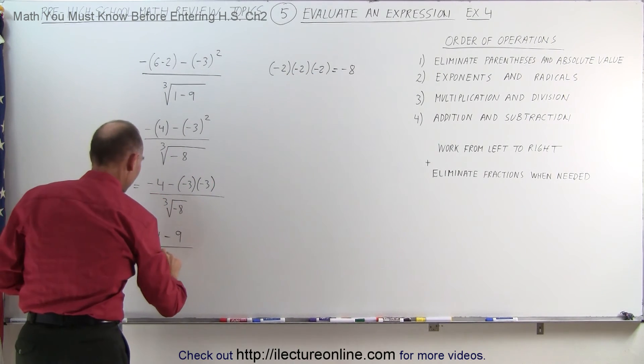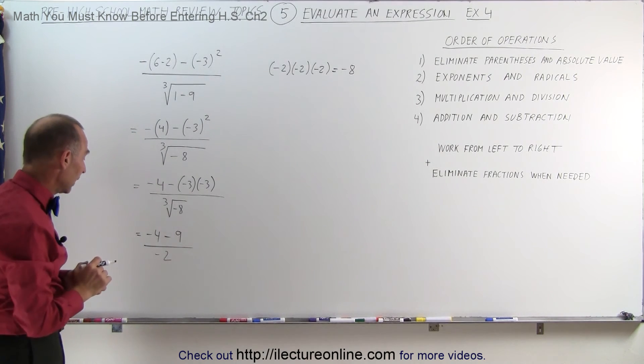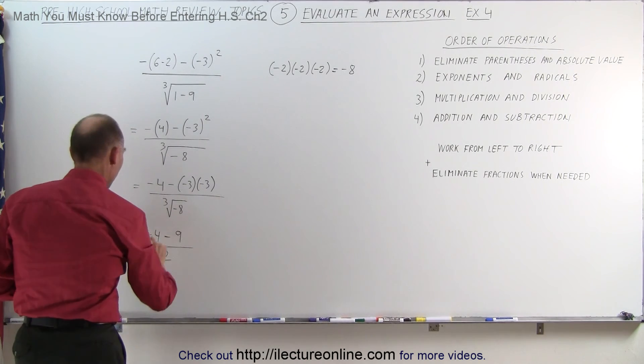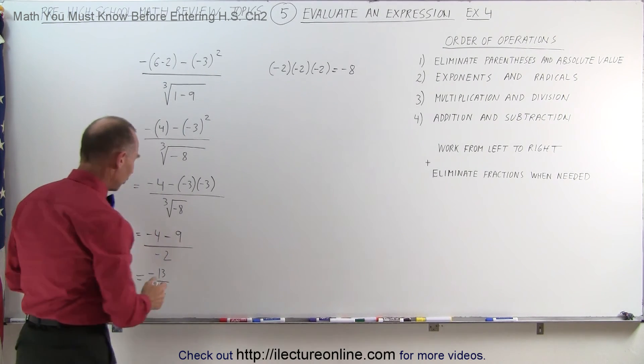Which means we can write this as negative 2. Now we need to simplify the numerator. So this gives us minus 4 minus 9 is minus 13, divided by minus 2. And of course,